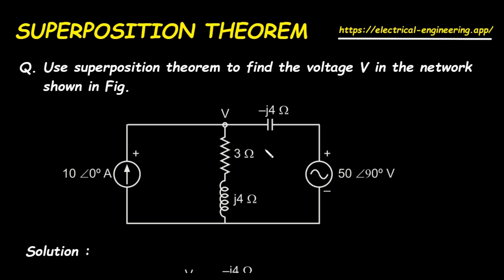Hello and welcome. In this video, we will walk through a detailed example of using the superposition theorem to solve an AC circuit problem. We'll break down every single step, from the basic theory to the complex number calculations, making it easy for anyone to follow along. Our goal is to find the voltage, labeled as V, in the network shown in the diagram.